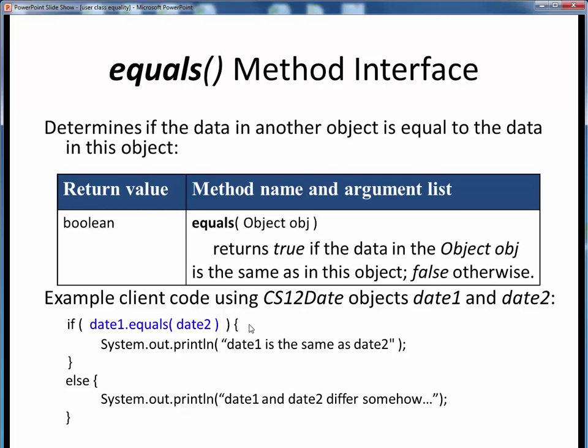Here's an example of how to use equals. Suppose we have two CS12 date objects, date1 and date2. We can compare the month, day, and year of either object against the other one using this syntax. We pick one of the dates as our current reference object, then invoke the equals method upon it using dot notation as usual, with the other date as the method's input.